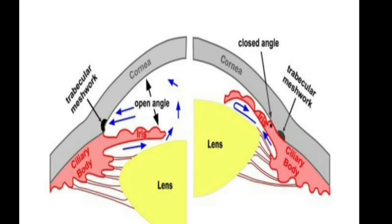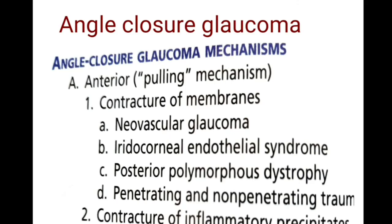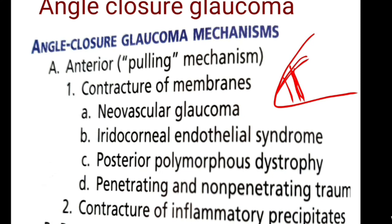In angle closure glaucoma, the angle structures are closed — you can't see them on gonioscopy. The iris is either pulled or pushed toward the cornea. In the pulling mechanism, a membrane forms and contracts, pulling the iris to adhere to the cornea — seen in neovascular glaucoma, iridocorneal endothelial syndrome, posterior polymorphous dystrophy, and contracture of inflammatory precipitates, all leading to iridocorneal adhesion and angle closure.